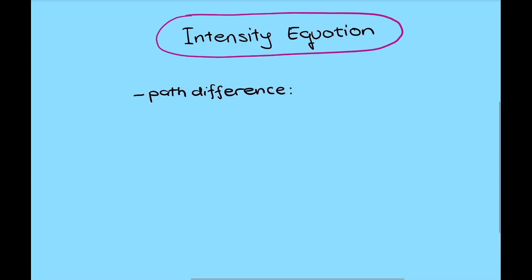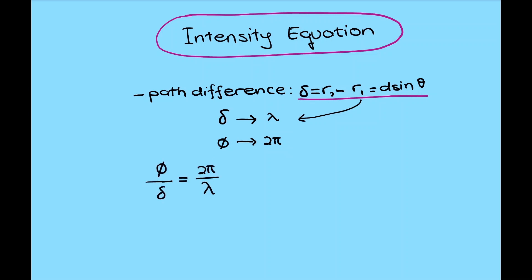As the path difference delta is given by d sin theta, bear in mind that this path difference is related to the portion of wavelength lambda. In similar way, we can relate the phase difference phi with the portion of cycle 2 pi. By relating their proportion, we can further manipulate to get this equation.